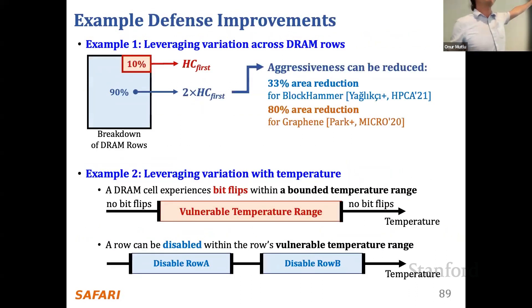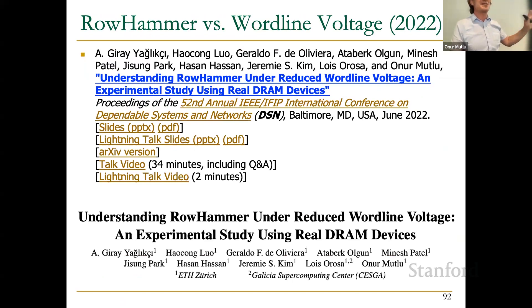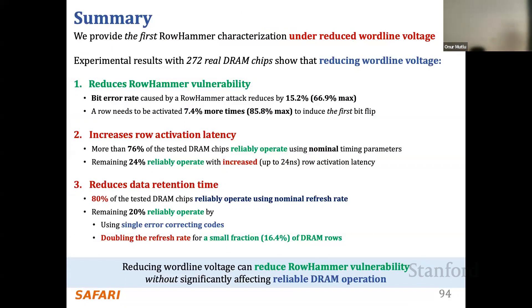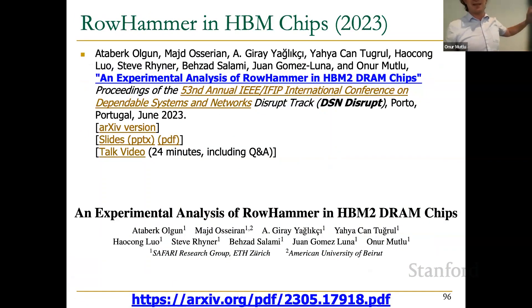Spatial variation is interesting: about 10% of DRAM chips are far more vulnerable than the remaining 90%, which you can take advantage of to build defense improvements. We also studied word line voltage — reducing it intuitively reduces disturbance, and that's true, but reducing word line voltage hurts data retention time and activation latency, so it's a tough trade-off with no easy fixes.